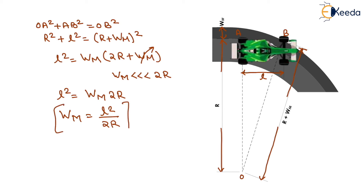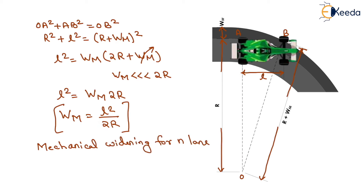If we have to calculate the mechanical widening for N lanes, it will be WM = NL² / 2R. That is the value of mechanical widening for N number of lanes.